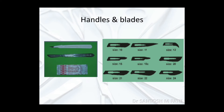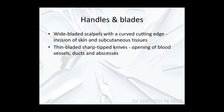These images show the BP handle mounted with blades. On the left is a number 3 BP handle already mounted with the number 11 blade, which is a sharp-tip blade. On the right is the number 4 BP handle mounted with blade number 22, usually used for major surgeries such as laparotomies or major incisions. Wide blade scalpels with a curved cutting edge are used for incision of the skin and subcutaneous tissue, while thin-bladed, sharp-tipped knives are used to open blood vessels, ducts and abscesses.